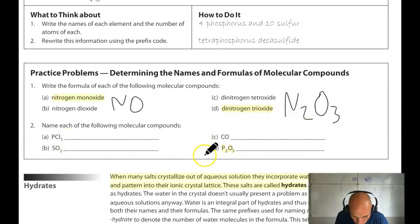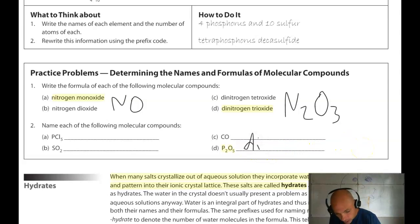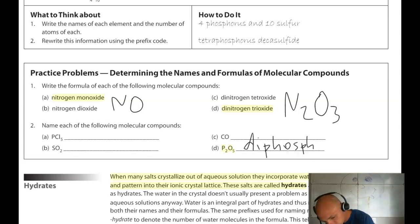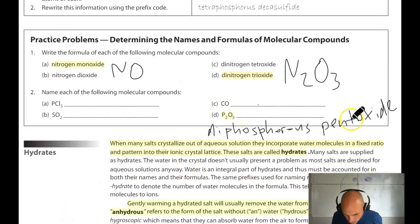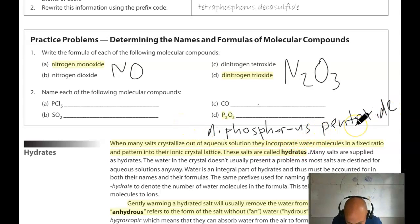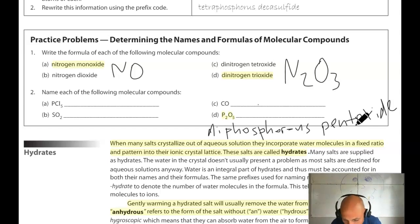Coming to practice problem 2D, going from the formula to the name: P2O5. The subscript for phosphorus is 2, so the prefix is 'di' — diphosphorus. The first nonmetal doesn't have its ending changed, so just 'phosphorus.' The subscript for oxygen is 5, so the prefix is 'penta.' When you attach 'penta' to 'oxide' and say it fast — 'pentoxide' — you naturally drop the A. So penta-oxide becomes pentoxide. The name is diphosphorus pentoxide.